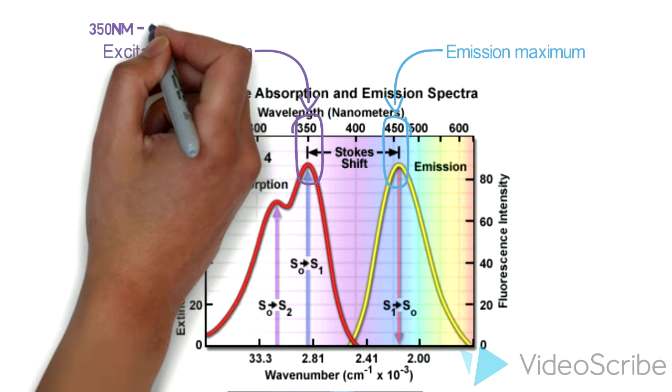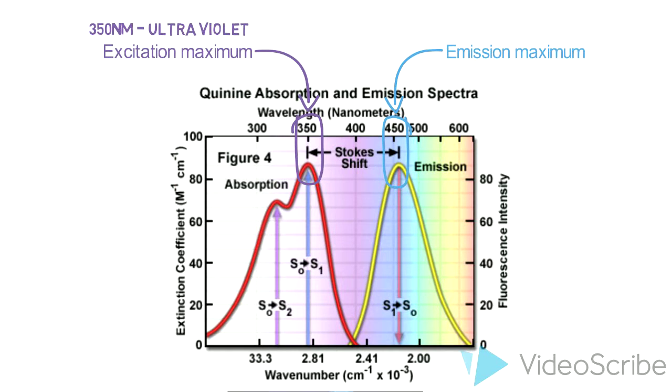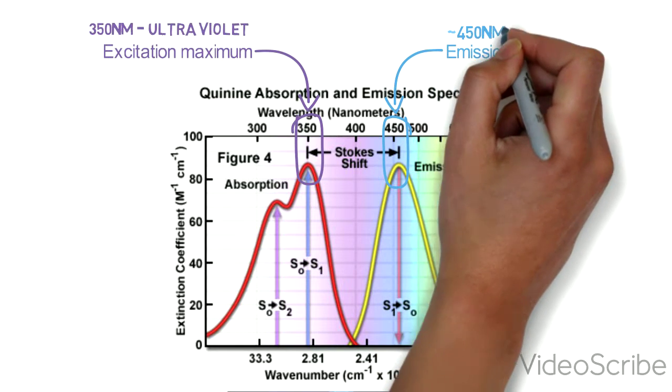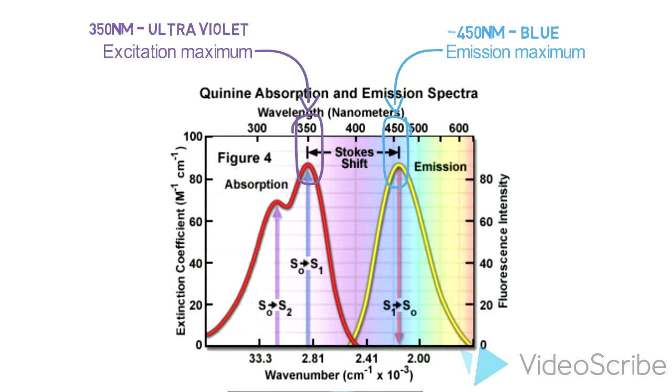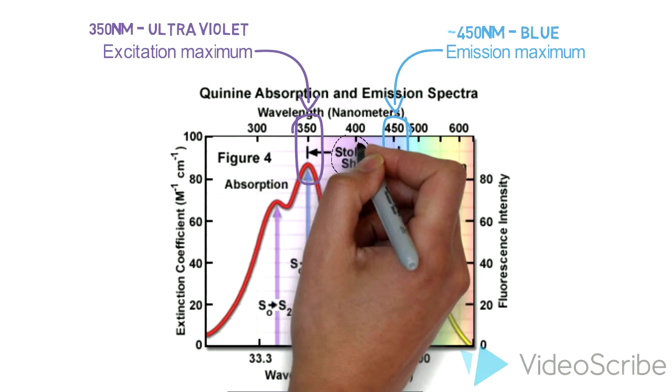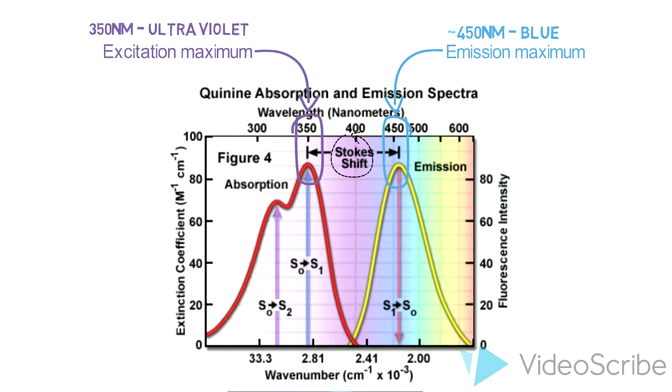In the example of quinine, the excitation maximum is 350 nm, which is ultraviolet light, and the emission maximum is about 450 nm, which is blue light. The length between these values is called Stokes shift of the fluorophore.